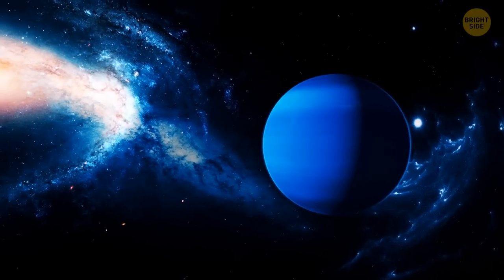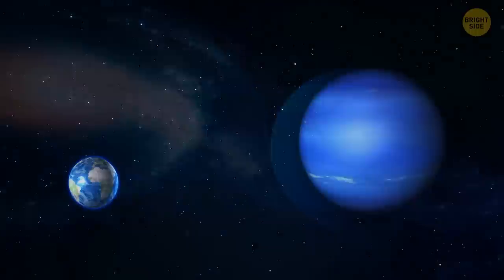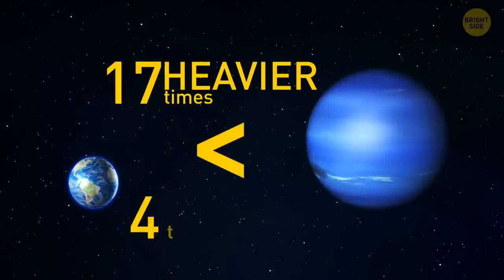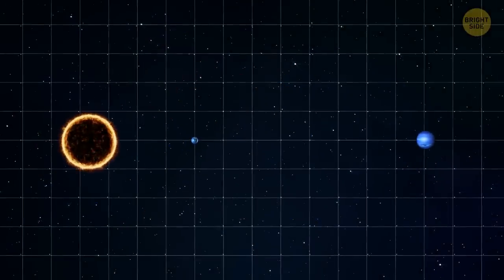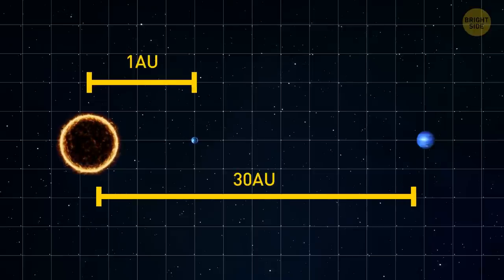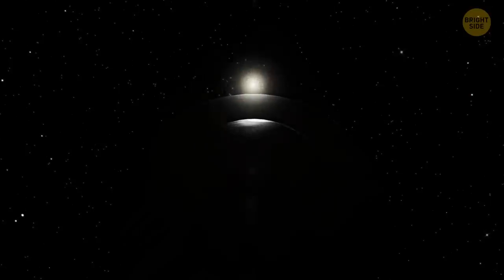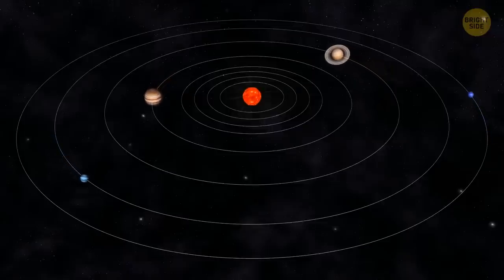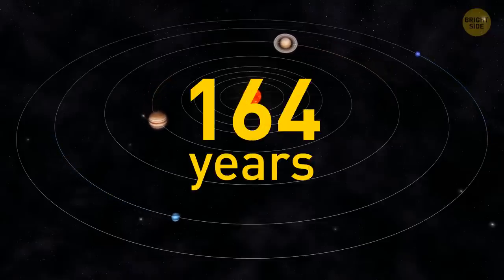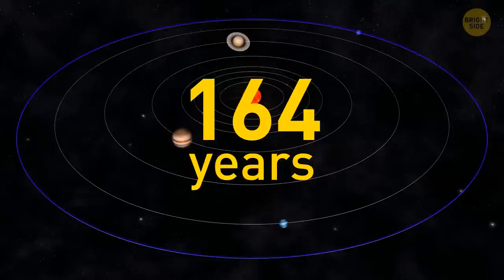Here's Neptune, the most faraway planet in our solar system. It's 17 times heavier and 4 times bigger than the Earth. It's 30 astronomical units from the Sun - 1 AU is the distance between the Sun and the Earth, so it's 30 times farther away from our star than we are.